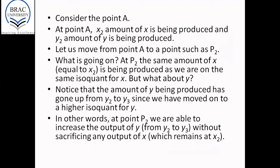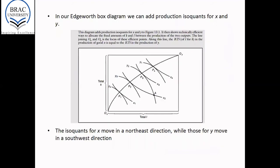Let us move from point A to a point such as P2. So move from point A to a point such as P2. What is going on at point P2? The amount of X2 produced has not changed. Because notice, the point P2 remains on the isoquant X2.